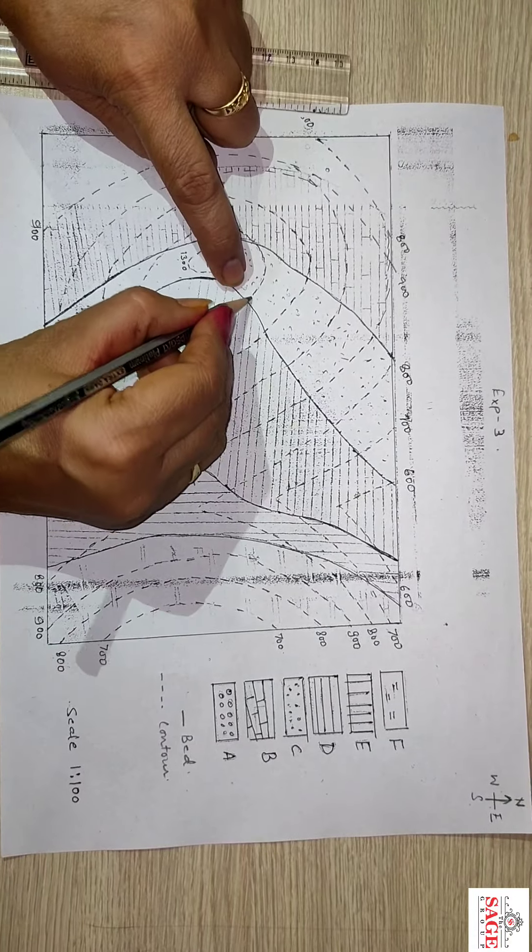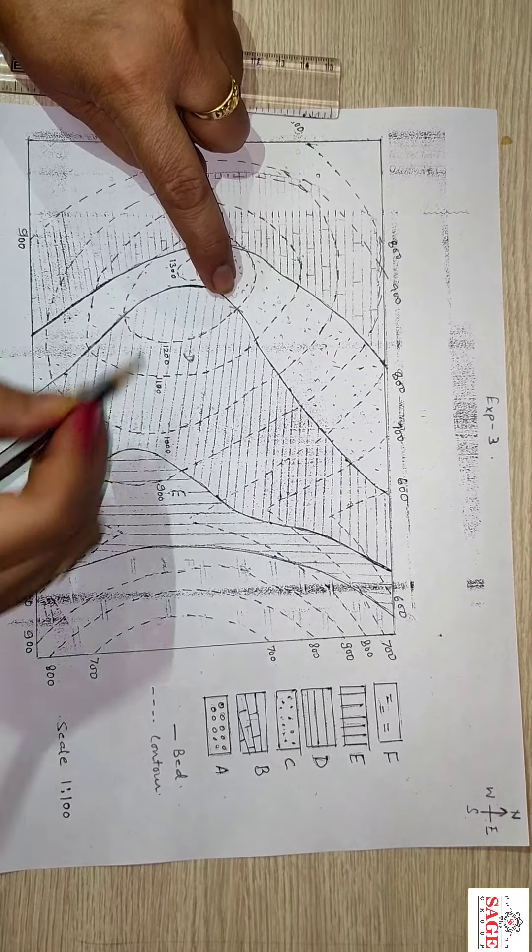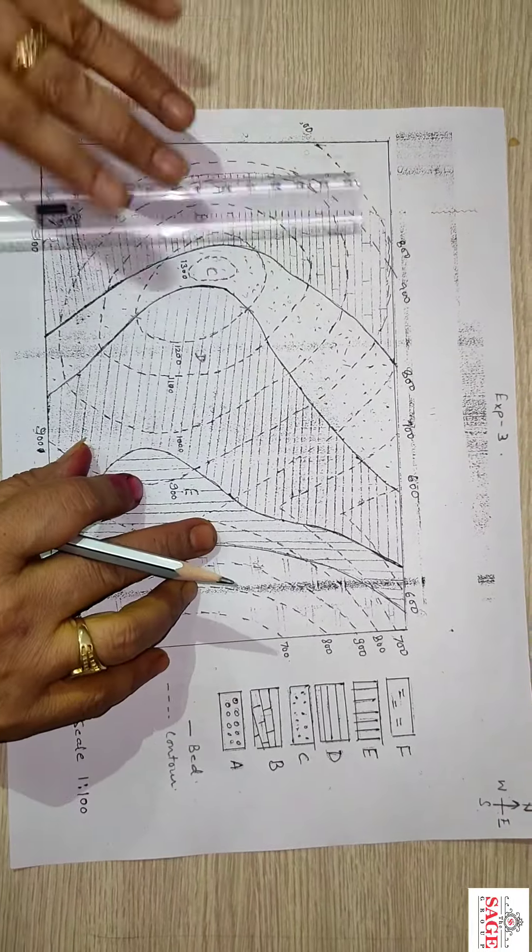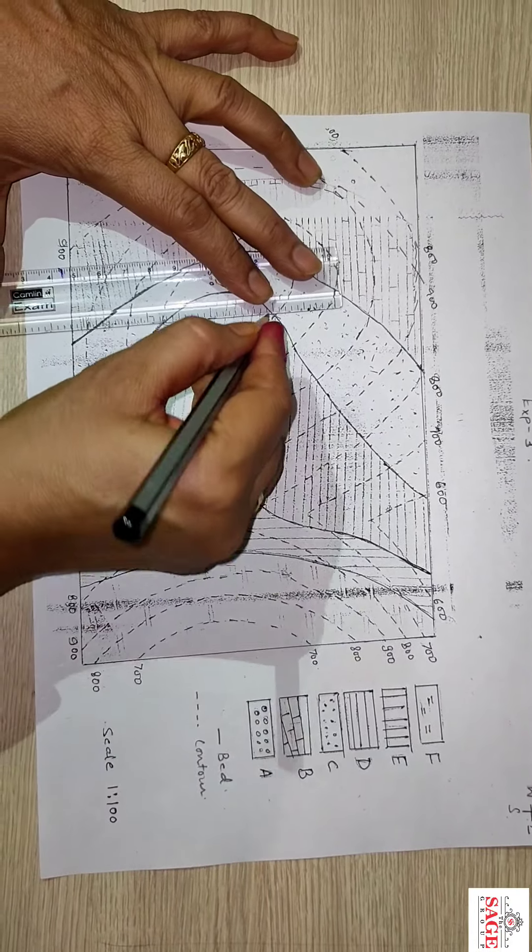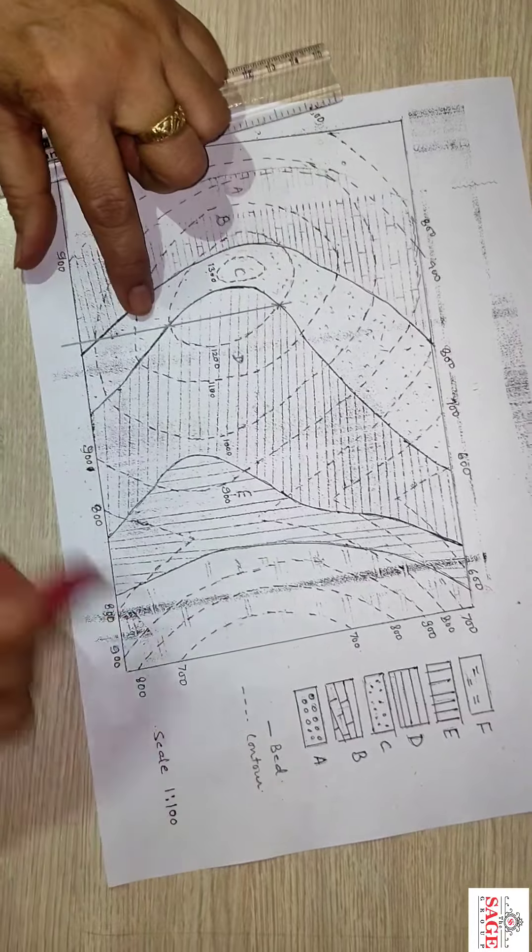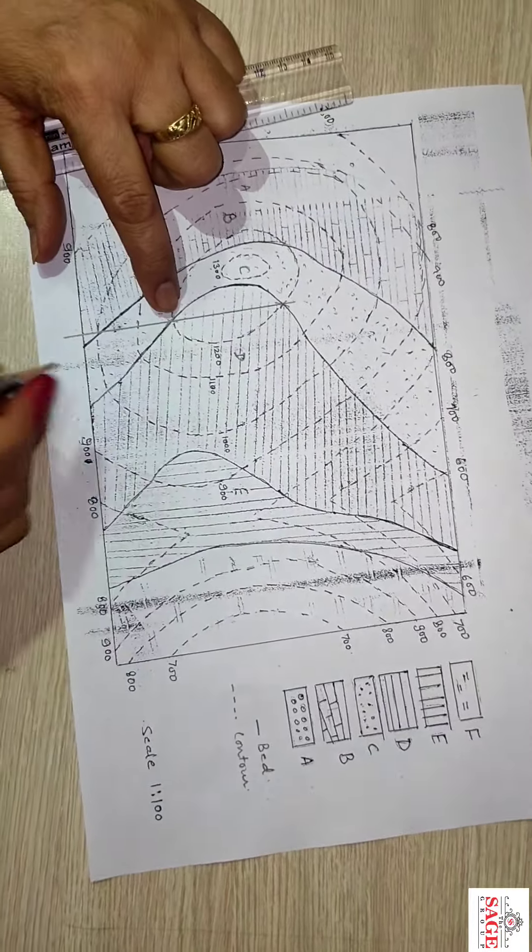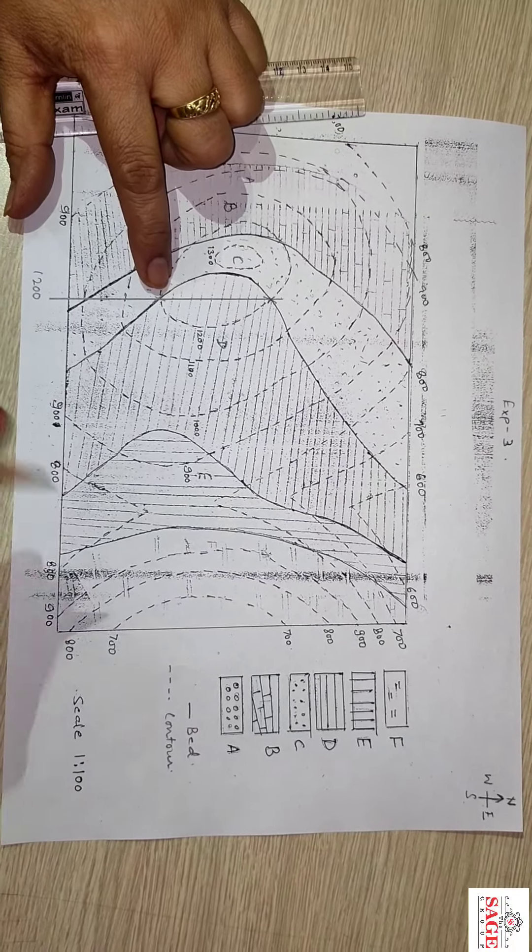Let us see in this bed. This is a contour of 1200. This is intersection point and this is also two. What we have to do? We have to join both these points by a line. Right? This line, value of this line is 1200. That means you have to note there.